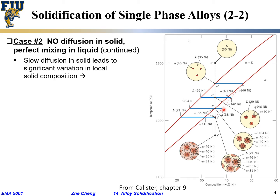The liquid composition follows the liquidus line. Based on the lever rule at this temperature, the fraction of liquid is determined by the opposite arm — from the average solid composition to the liquidus line — divided by the total. There is still some liquid left, and that liquid will continue to go through the solidification process, forming solid with even lower composition outside.